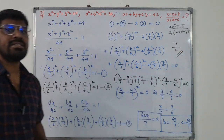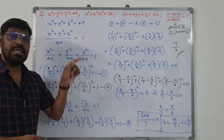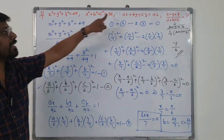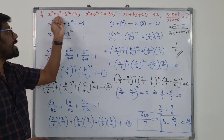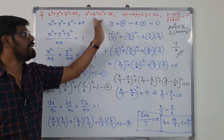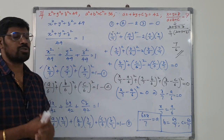The answer is 7 by 6. The wrong guess would have been x plus y plus z equals 7 and a plus b plus c equals 6, which is incorrect.